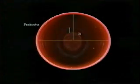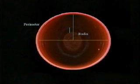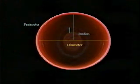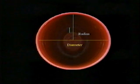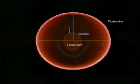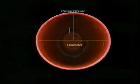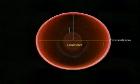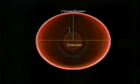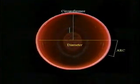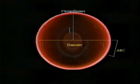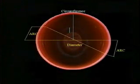A radius is a section of a line from the center of the circle to the perimeter of the circle. A perimeter is a closed curve or circle, which is synonymous with a circumference of a circle. A circumference is a boundary line of the circle. An arc of a circle is a measured part of a circle shown between two points on the circle.